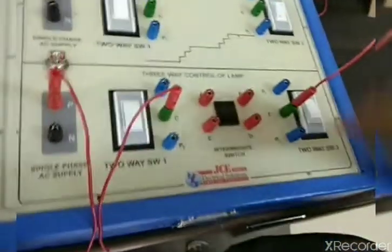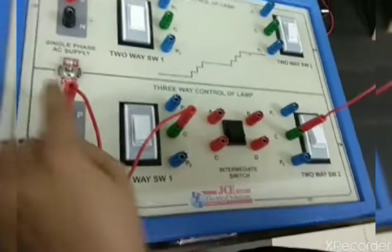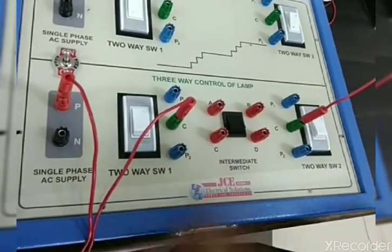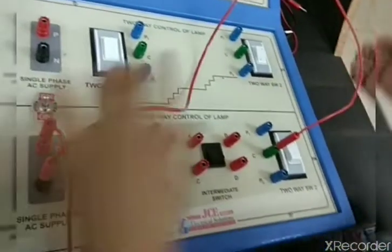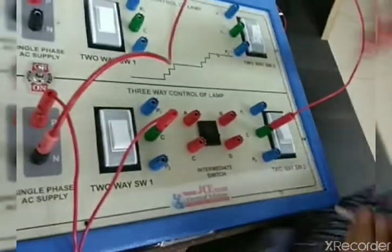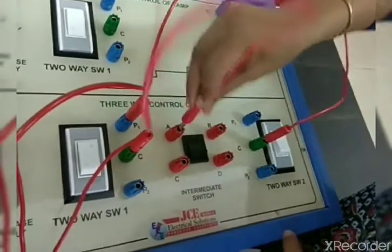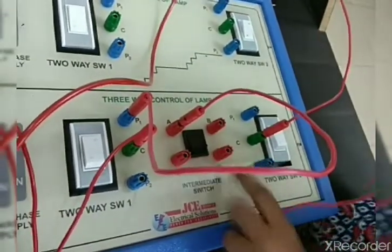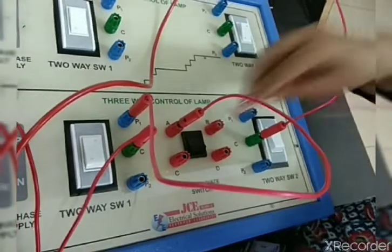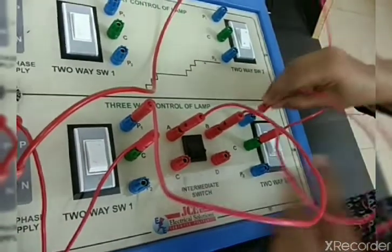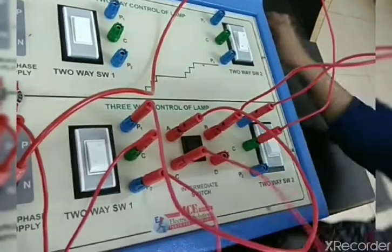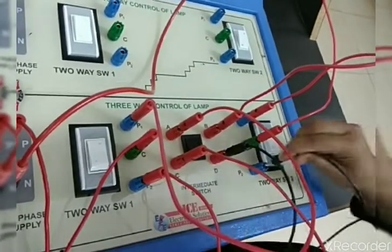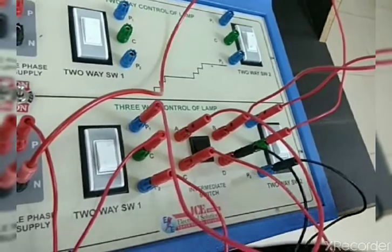In this three-way control lamp demonstration, the phase is connected to the common terminal of the first switch, and the common terminal of the second switch is connected to the lamp. The other end of the lamp is connected to neutral. For the intermediate switch connections: P1 is connected to point A, B is connected to P1, P2 is connected to C, and D is connected to P2.